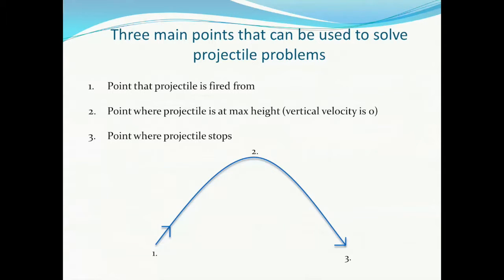There are three main points that can be used to solve a projectile motion problem. The first is the point where the projectile is fired from. Here, initial y and initial x positions are zero. The second is the point where the projectile is at its maximum height. This is often useful because the y-component of the velocity will be zero here. Sometimes this can give you an added known to help solve the problem.